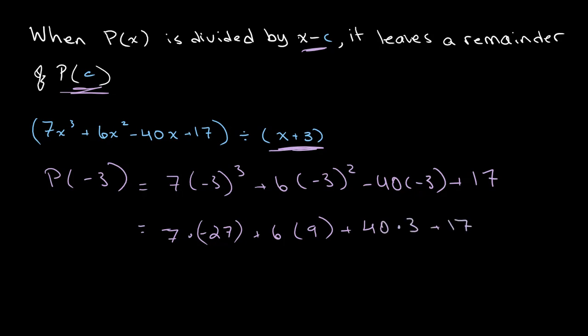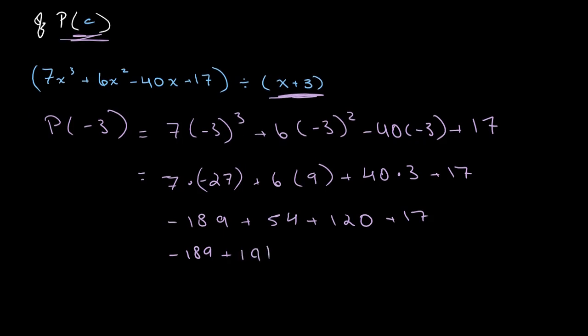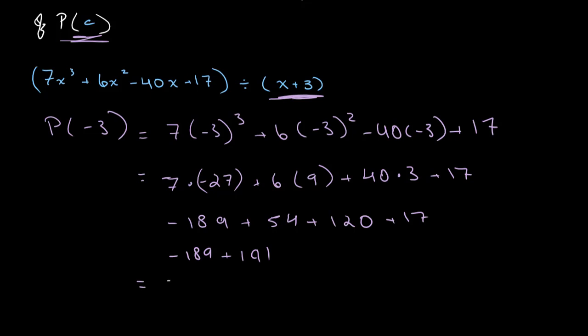And we can simplify this. This gives us -189 plus 6 times 9 is 54 plus 120 plus 17. This gives us -189 + 191, which gives us a value of 2.